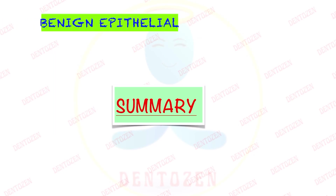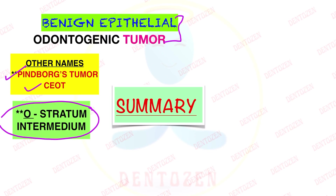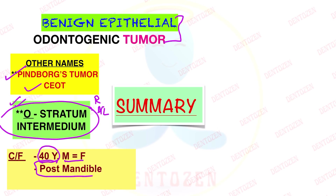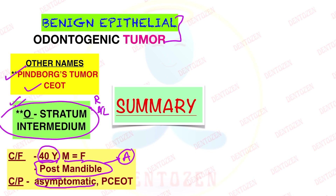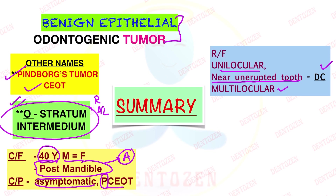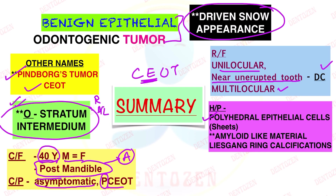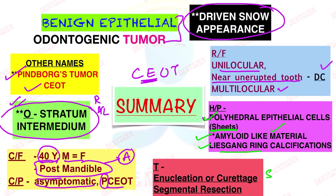In summary: CEOT is a benign epithelial odontogenic tumor similar to ameloblastoma. Other names are Pindborg's tumor or CEOT. It originates from stratum intermedium or remnants of dental lamina. Mean age is 40 years, males and females equally affected. Most common site is posterior mandible. Clinically it is an asymptomatic slowly growing mass; peripheral CEOT also exists. Radiographically it can be unilocular or multilocular radiolucency; near an unerupted tooth it resembles a dentigerous cyst; the 'driven snow appearance' describes scattered calcification flecks. Histopathologically: polyhedral epithelial cells in sheets, amyloid-like material, and Liesegang ring calcifications. Treatment ranges from enucleation or curettage for small lesions to segmental resection for large ones.